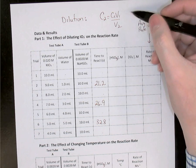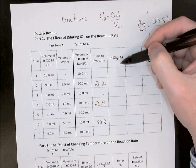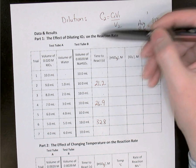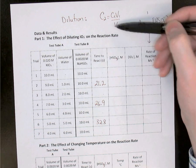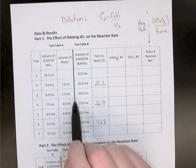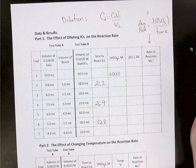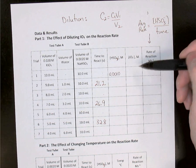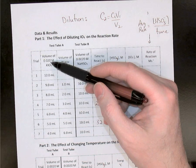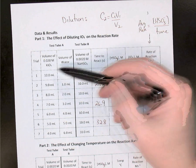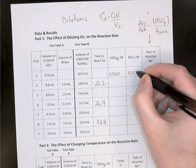For trial 1, we can calculate the bisulfite concentration after mixing. C1 is 0.0020 molarity, V1 is 10 mL, and V2 is 20 mL total, giving us 0.0010 molarity. For the iodate in trial 1, its original concentration was 0.020 molarity, and using 10 mL in a total of 20 mL gives a concentration after dilution of 0.010 molarity.